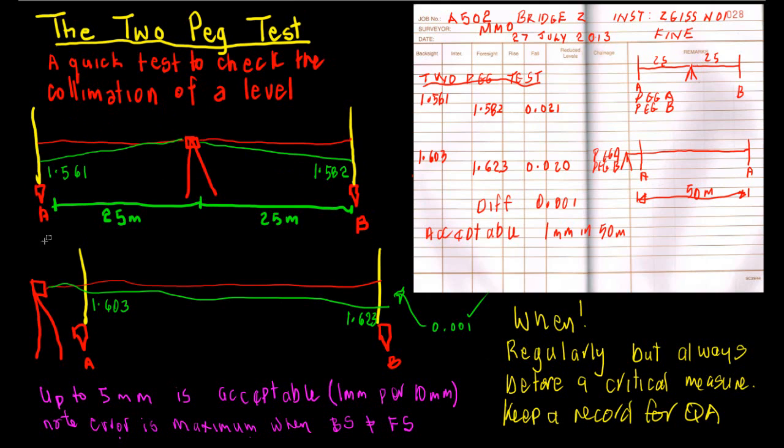The next step in the two peg test is to then move the level to as close as you can observe to point A. Some levels only focus down to a meter or so, but generally a meter or two meters is quite enough.